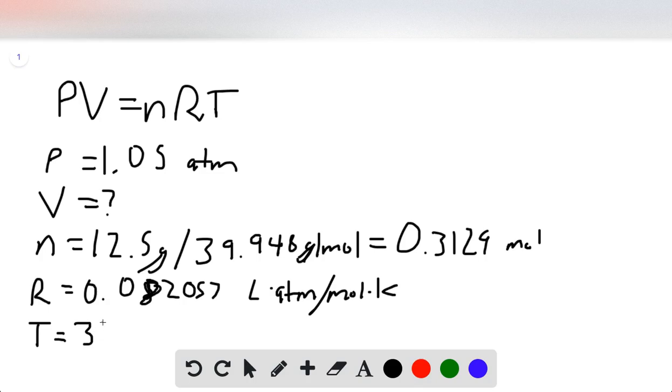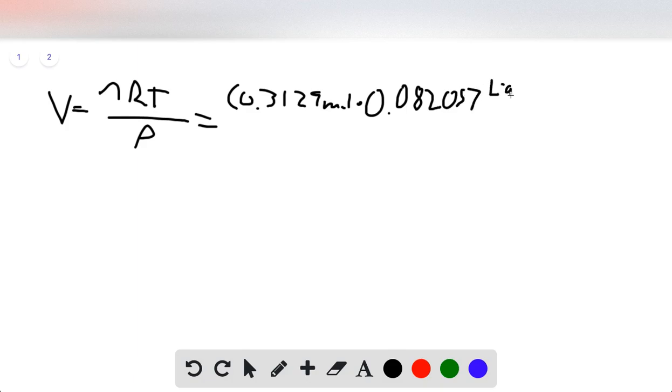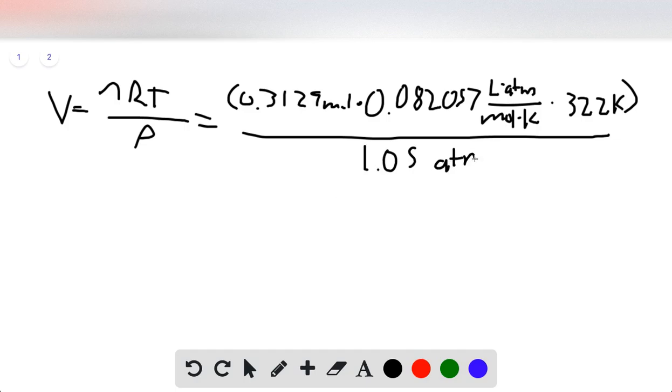And so our temperature is 322 Kelvin. I'll go to the next page here and rearrange our equation to solve for V. So nRT over P. Our n, we just found, 0.3129 moles, times our R value, 0.082057 liter atmospheres per mole Kelvin. Our temperature is 322 Kelvin. And our pressure is 1.05 atmospheres.